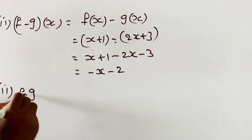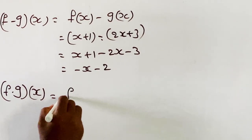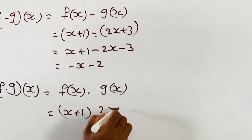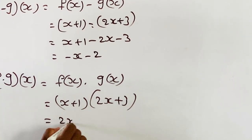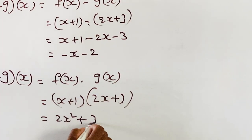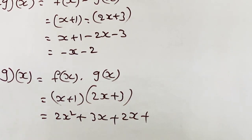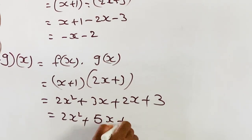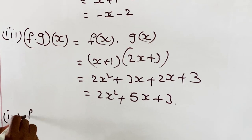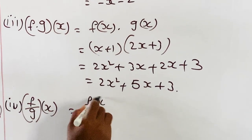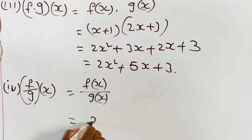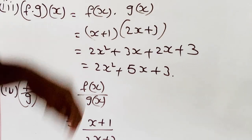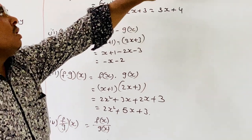Third, F into G of X equals F of X into G of X. F of X is X plus 1 multiplied by G of X which is 2X plus 3, giving 2X squared plus 5X plus 3. Fourth, F by G of X equals F of X by G of X, that is X plus 1 by 2X plus 3. Like this, we solve problems involving sum, difference, product, and quotient functions.